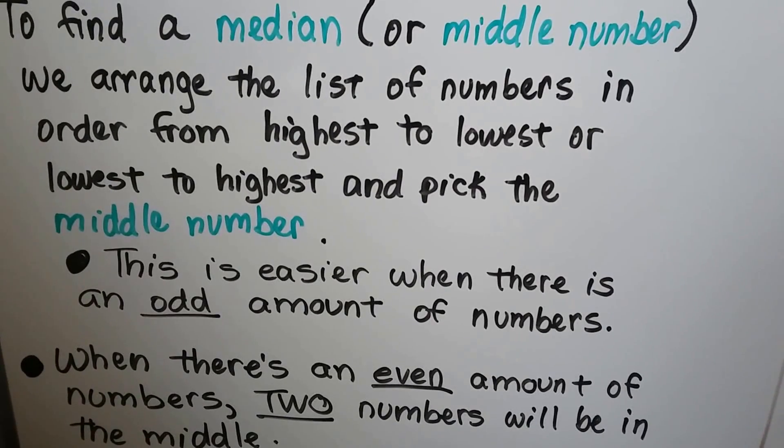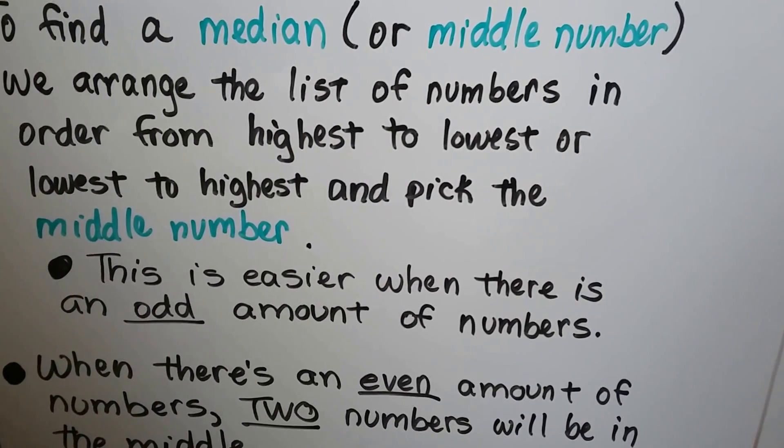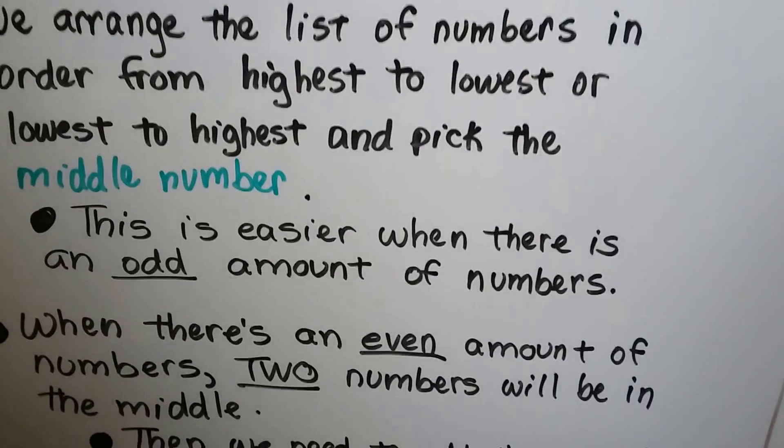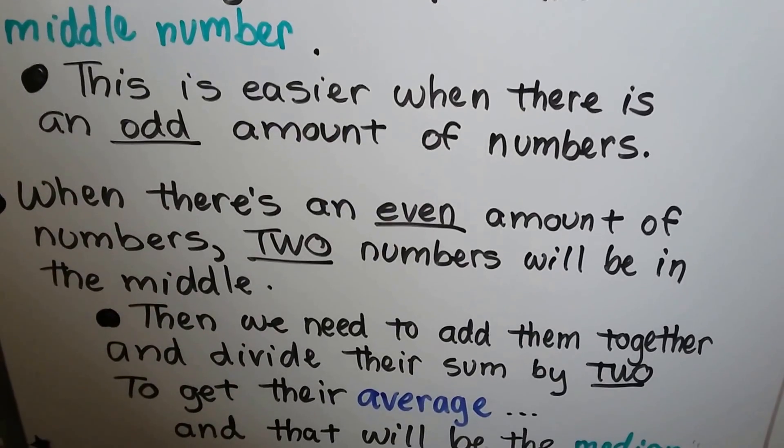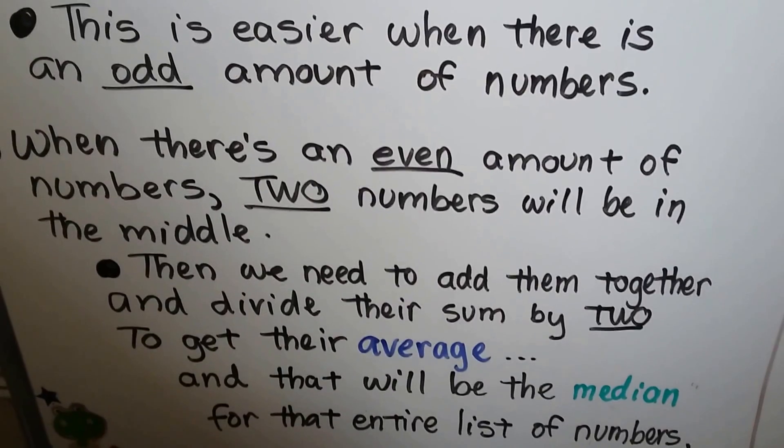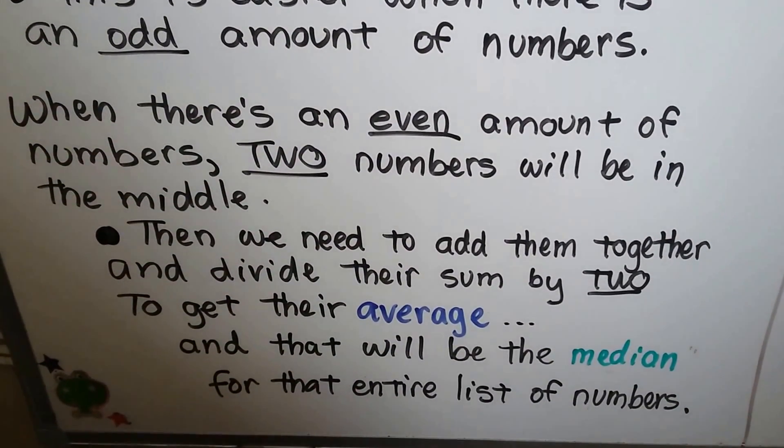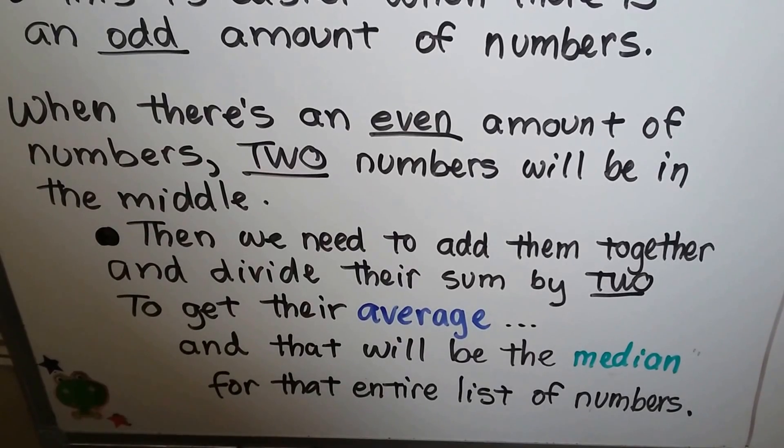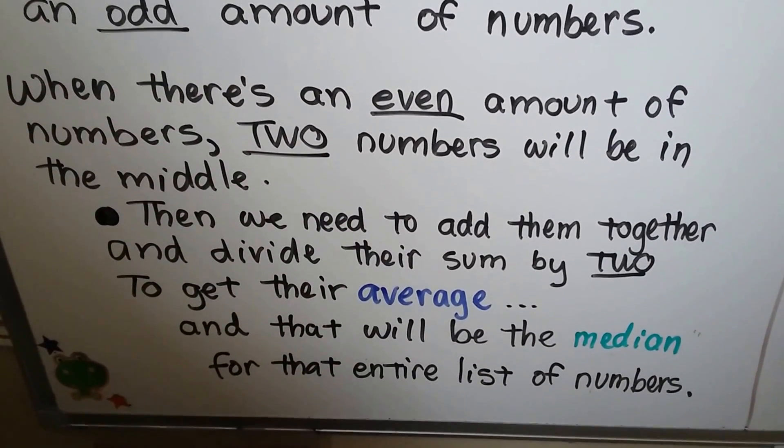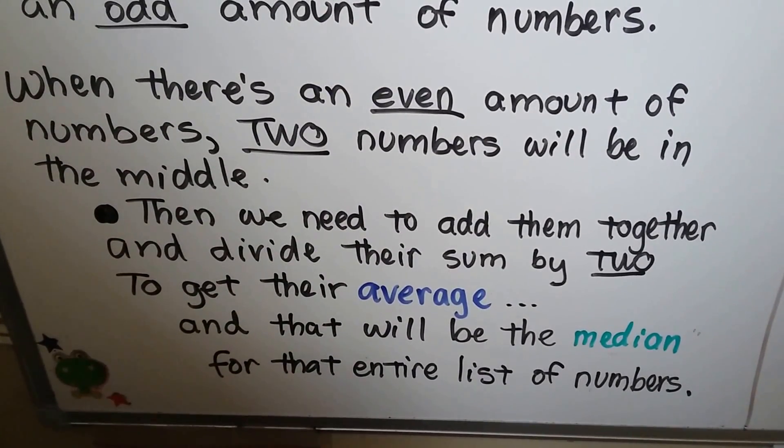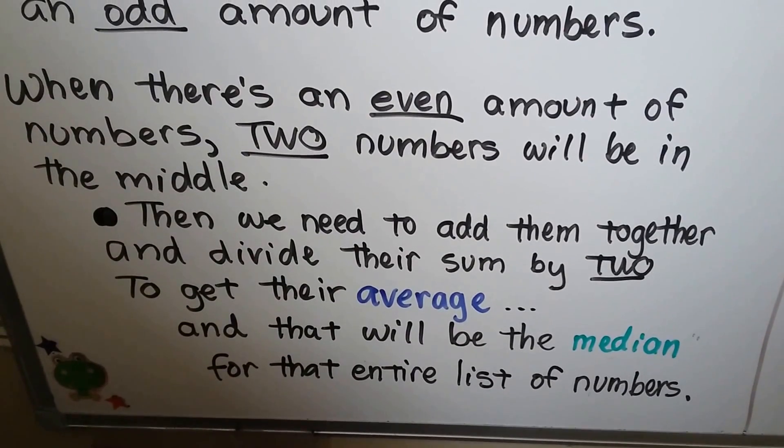Now this is easier when there's an odd amount of numbers. There will be a middle number. When there's an even amount of numbers, two numbers will be in the middle. Then we need to add them together and divide their sum by two to get their average. So we have to take those two middle numbers and find their average, and that will be the median for that entire list of numbers.